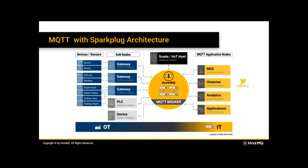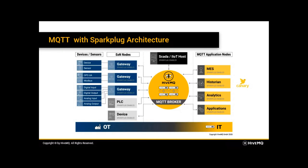With the MQTT and Sparkplug architecture, you have devices and sensors connecting to edge nodes — which are gateways — that are already Sparkplug enabled. The reason you need a gateway is because those devices and sensors may not support Sparkplug or MQTT, so the gateway transforms the data into MQTT messages. At the bottom, there are also PLCs and devices that are Sparkplug enabled and directly connect to the HiveMQ MQTT broker. On the right-hand side, application nodes — MES, historian, analytics — also support Sparkplug. This becomes a standardization for the entire message in manufacturing, so you no longer have to do customization for each individual environment.